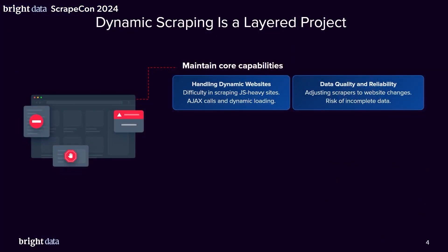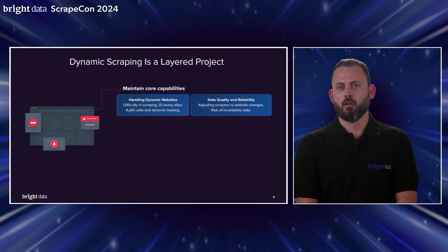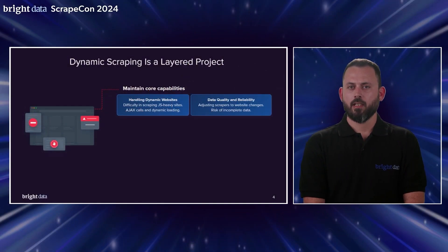I want to talk about dynamic scraping as a layered process. There are different parts to scraping, especially when working with browsers. Starting with the core capabilities: when doing dynamic scraping, at minimum you need to do rendering of the site — loading the site with a browser — and you'll also need to perform actions like scrolling, clicking, loading JS-heavy sites, Ajax calls, and so on.